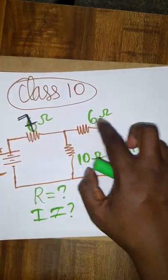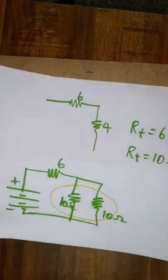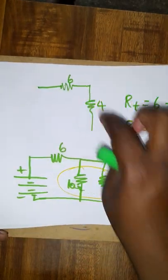This is in a series. 6 plus 4 will have 10 ohms. That solution will be 10. So this together will become 10.